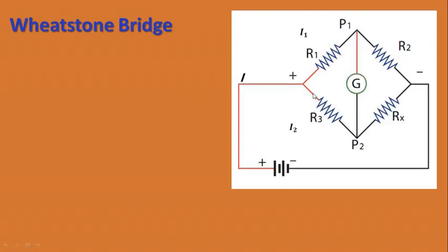And you can clearly see that at this point, the current from R1 flows as I1 and the current through R3 and Rx flows as I2. This is very important to know that we have taken a bridge between these two combinations of parallel resistors, and this bridge is the galvanometer which is connected between two points P1 and P2.